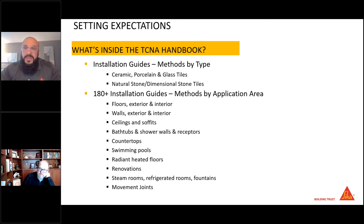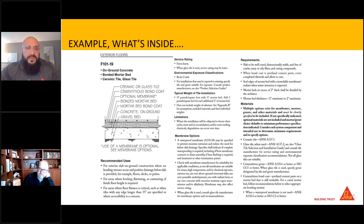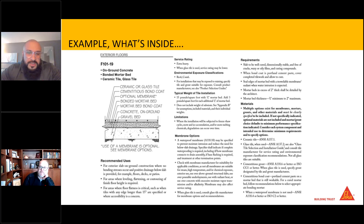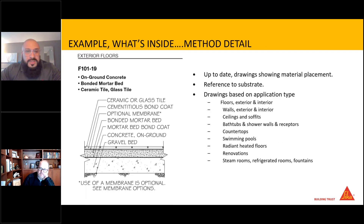What's inside the TCNA handbook? Over 180 installation guides — whether it's porcelain, ceramic, glass tile, or natural stone, there will be a guide in there. One of the unwritten rules: if it's not in the book, it is not approved. Here's an example — the F101 method for exterior floor: you have your mud bed, your bond coat, your optional membrane, with all the different recommended uses and materials specified. The good thing about the handbook is that most methods do not change — they just add a different method to the book. It has drawings based on application types, from fountains to interior and exterior applications.